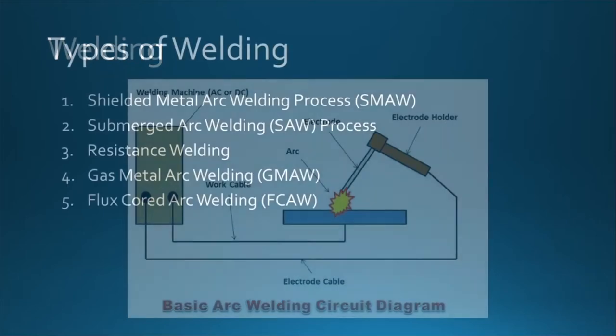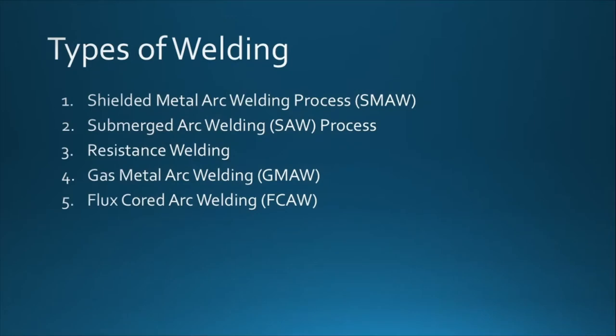Now we proceed to the different types of welding processes. We have: shielded metal arc welding (SMAW), submerged arc welding (SAW), resistance welding, gas metal arc welding (GMAW), and flux cored arc welding (FCAW).